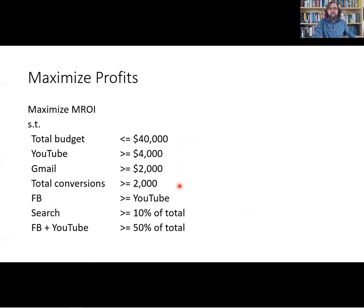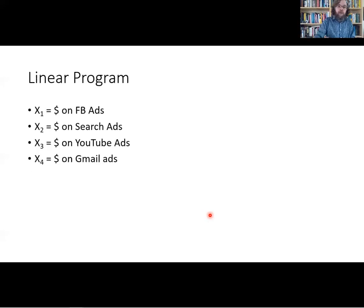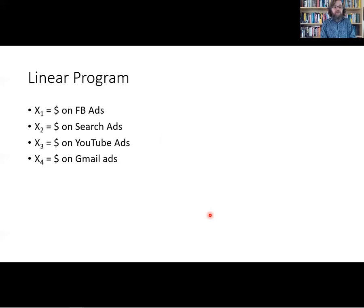We also feel like Facebook spending should be more than YouTube. We want search to be at least 10% of our total spending. And between Facebook and YouTube, we feel like those two together should represent at least 50% of our total. We're going to use X1 as the dollars spent on Facebook ads, X2 as the dollars on search ads, X3 as the dollars on YouTube ads, and X4 as the dollars spent on Gmail.